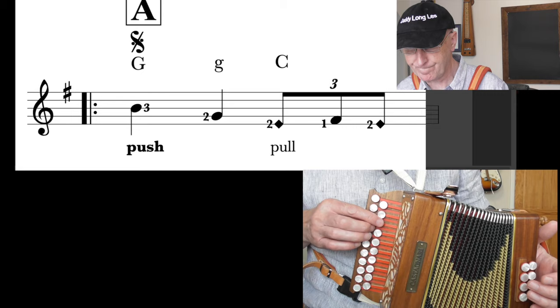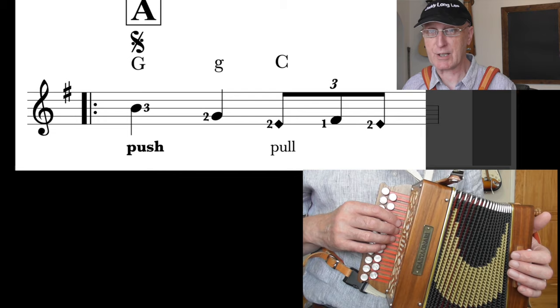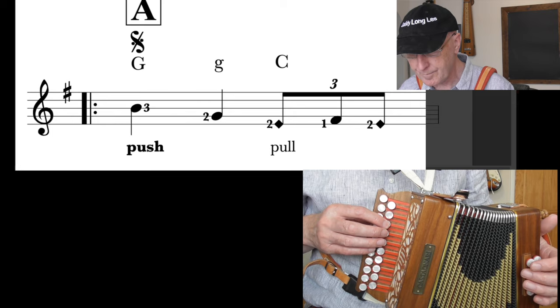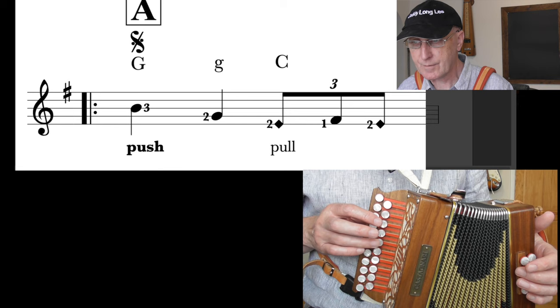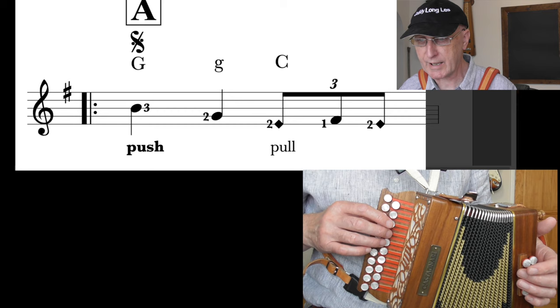So we've just played, we're going to do this. Now it sounds a bit weird because we've got that triplet. It will make more sense, as is often the case with bars of three, when we get the next bar. So we've got B and G. Okay, so finger three falls nicely on the B, finger two falls nicely on the G, on the button above.